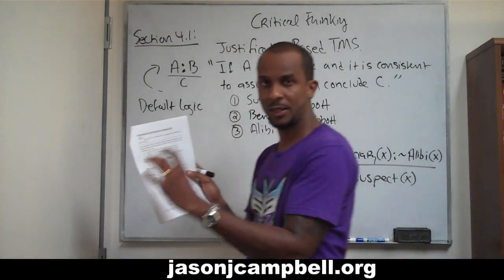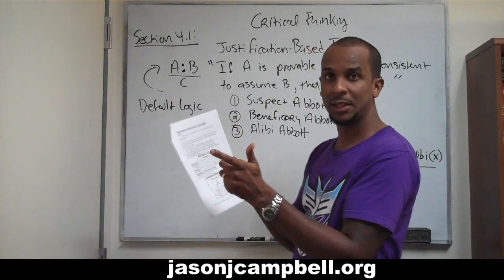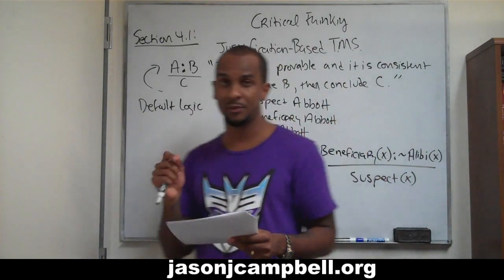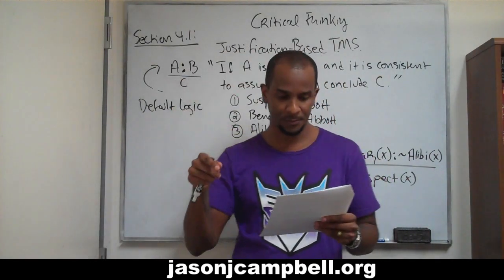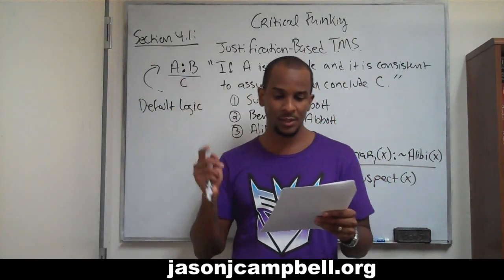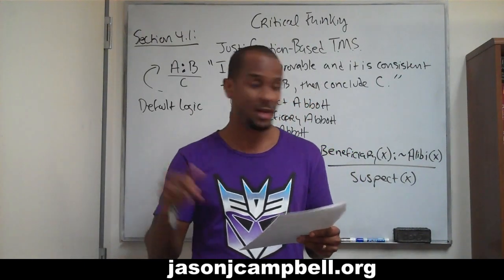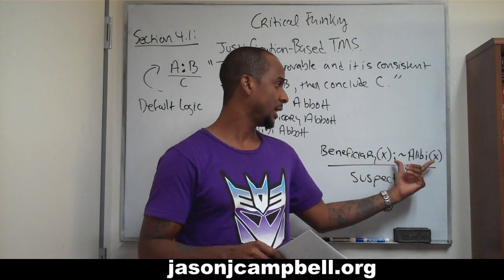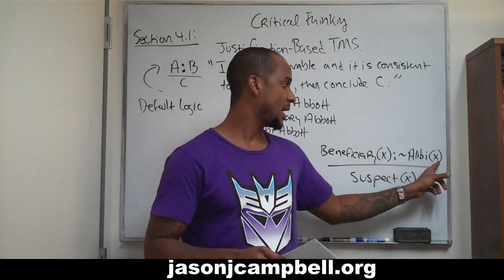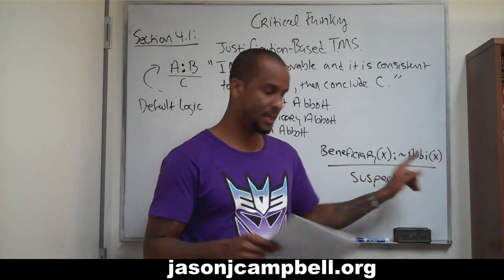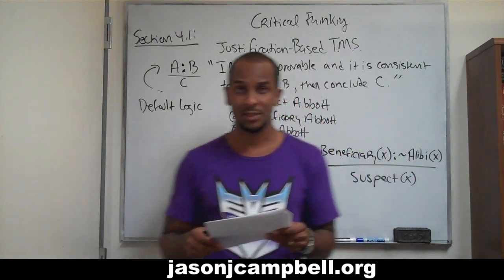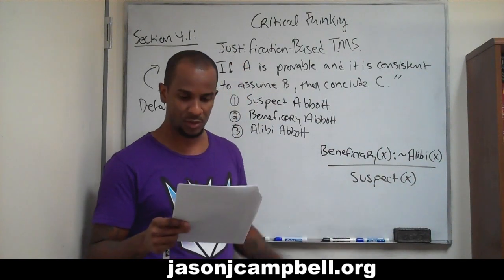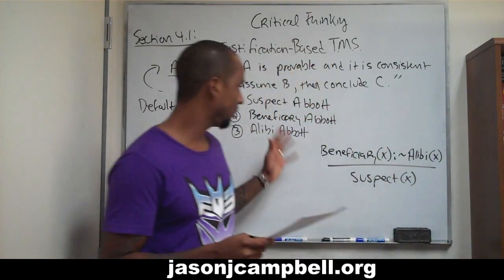If you need to go through that a little bit, I've broken it down line by line and showed you what each part represents. If it's provable that X is the beneficiary — beneficiary X — and it's consistent to assume that X has no alibi, that's the negation of alibi X, then conclude that X is the murder suspect. So that should be clear.